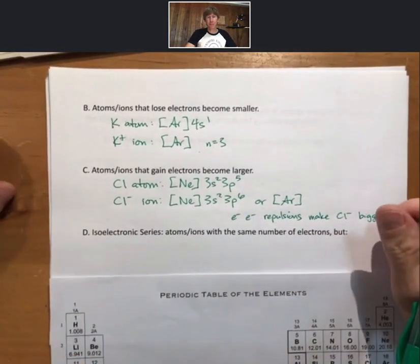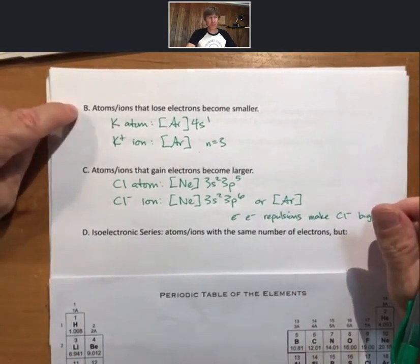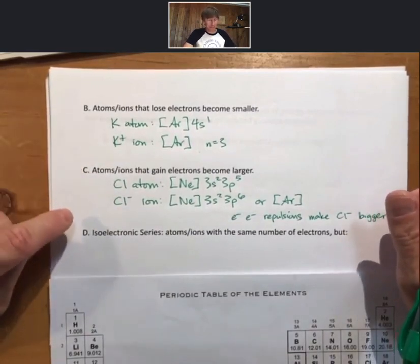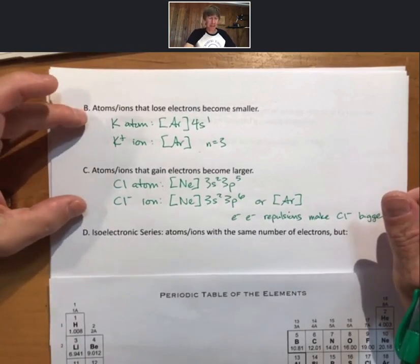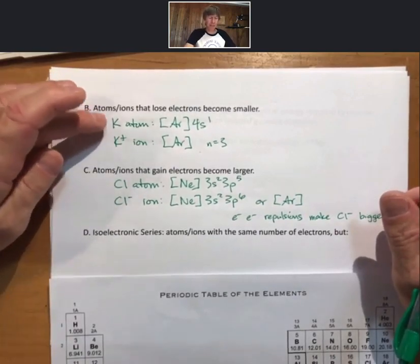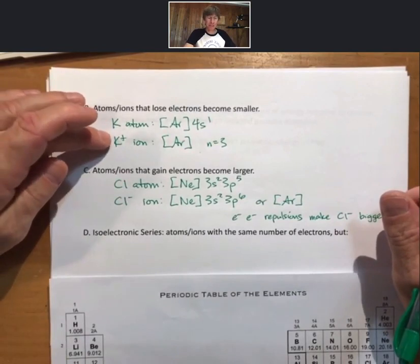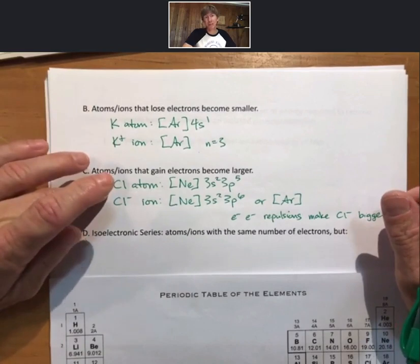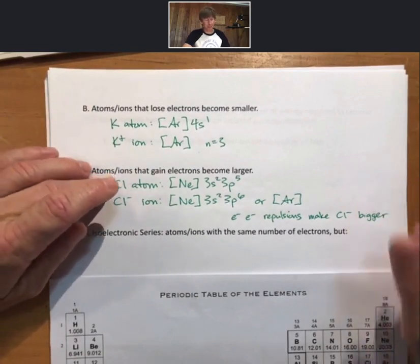So, trends here. Lose electrons become smaller. Gain electrons become larger. And before I do D, I want to point out that in both of these cases, potassium is involved, so it has the same number of protons. Both of these, chlorine is involved. It has the same number of protons as well.